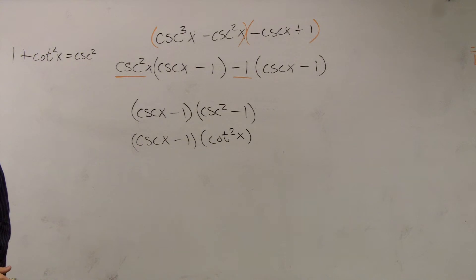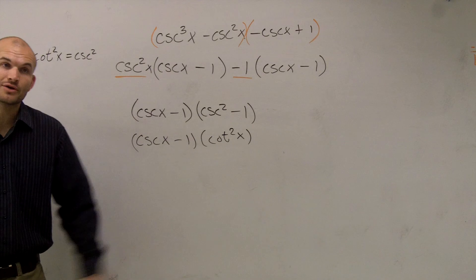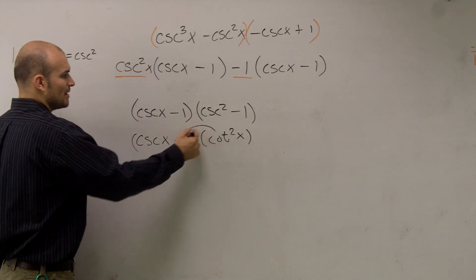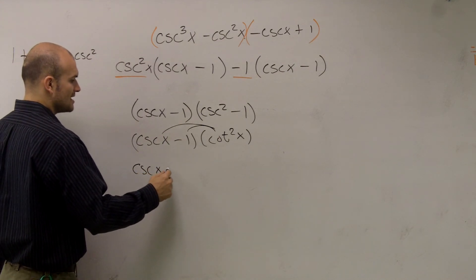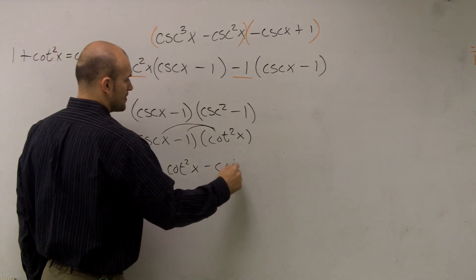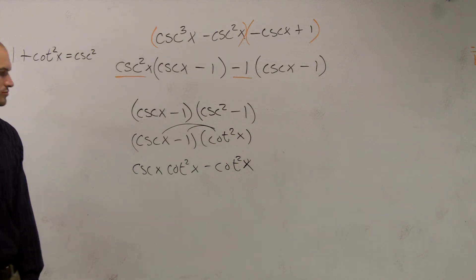And let's see here. Now what I can do is I can multiply that through. So, like I said, I'm just trying things. I don't know what else is going to work, but let me just go and see if multiplying that will simplify more. So if I multiply this through now, I'll get cosecant of x times cotangent squared of x minus cotangent squared of x.